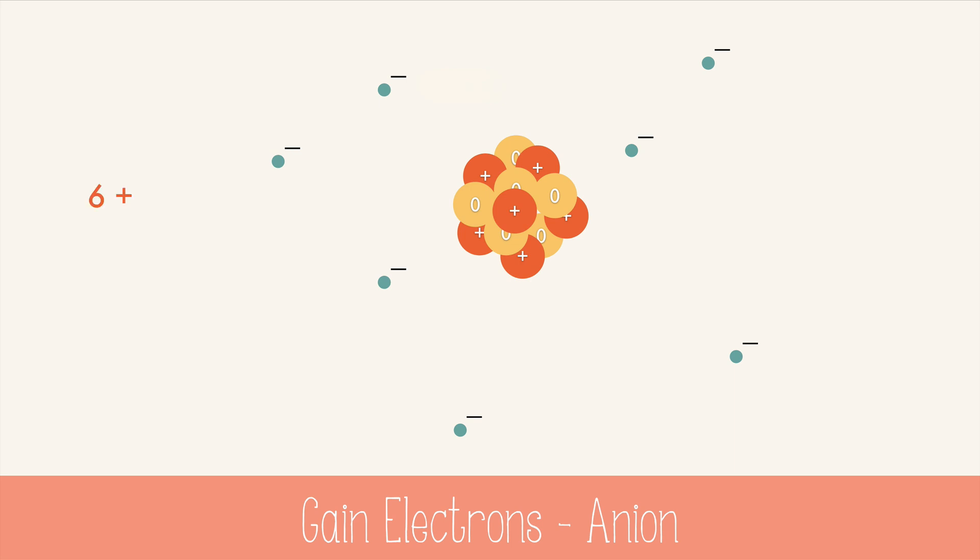In this case, there are 6 protons and 7 electrons, leaving an overall negative charge. This is an anion, because anions are negatively charged. It helps me to remember that anions have the letter N in it twice, which stands for negative.